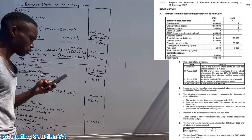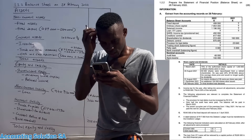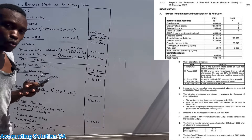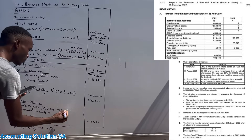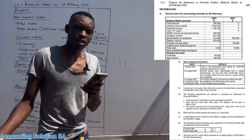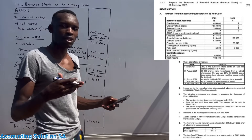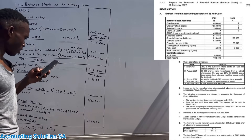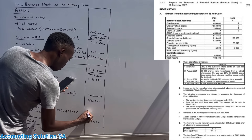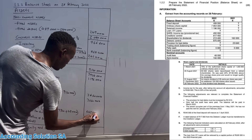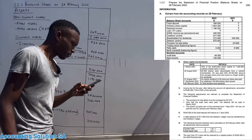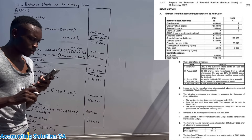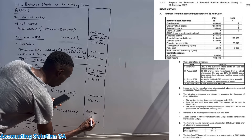Under payables, transaction D says only half of the audit fee was paid and the balance will be paid next period — this is an accrued expense, which is a liability under trade and other payables. They paid 48,000, which is half, so the other half is also 48,000. Closing trading and other payables gives approximately 647,500. Shareholders for dividends — the final dividends balance at end of 2022 is 213,400.